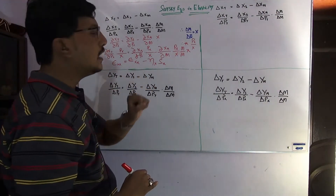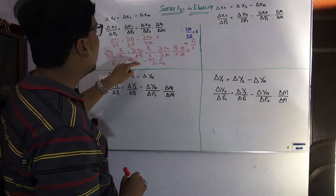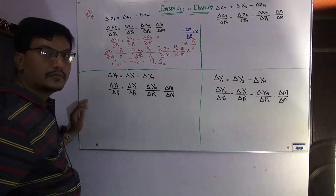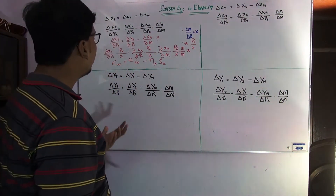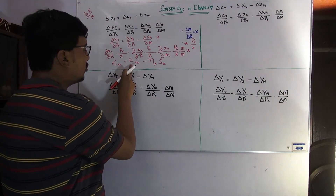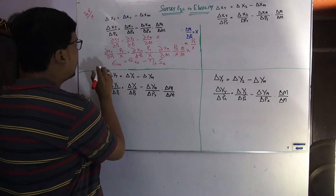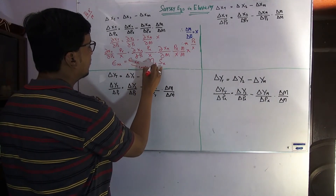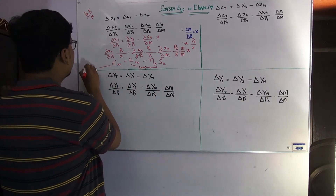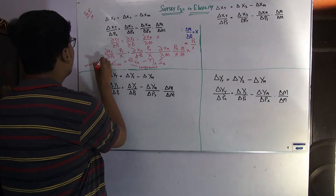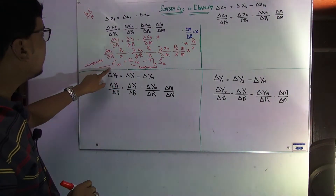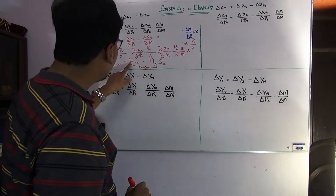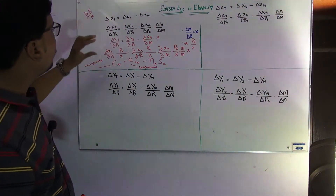The Slutsky equation has been converted into elasticity form: own price elasticity, income elasticity, and share of X. There are two own price elasticities — they are not the same. One is the substitution effect (compensated elasticity, derived from the Hicksian demand curve) and the other is the total effect (uncompensated elasticity, derived from the Marshallian demand curve).